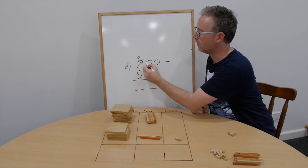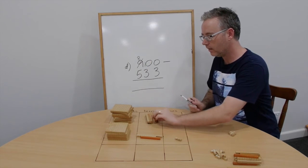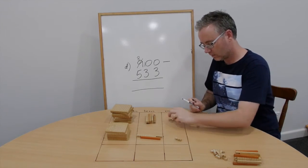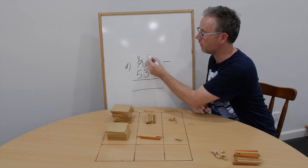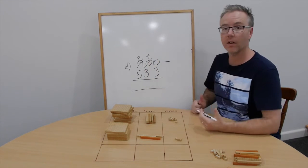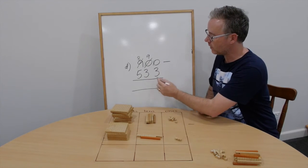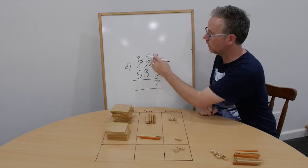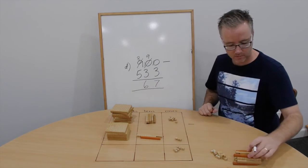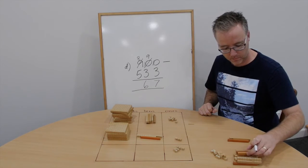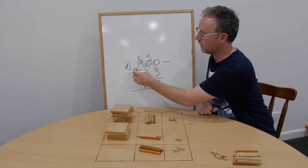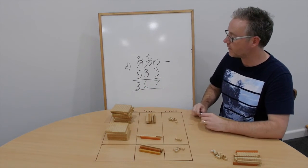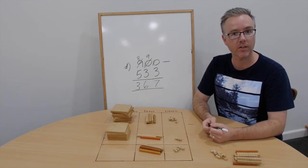We now have 800 and ten tens. Then we trade a 10 for ten ones. Cross out the 10, write 9. And now we can actually do this really easily. 10 take away 3 is 7. 9 take away 3 is 6. And 8 take away 5 is 3. I've run out of concrete material. Answer, 367. Check your estimate.